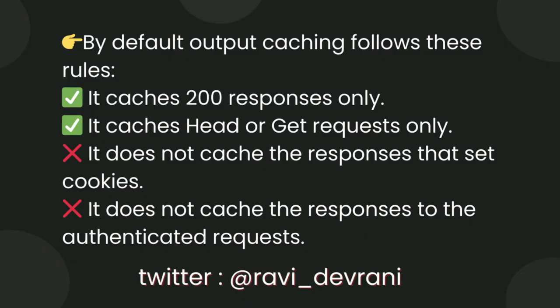There are a few default rules to keep in mind. By default, output caching only caches 200 responses, only caches HEAD or GET requests, does not cache responses that set cookies, and does not cache responses to authenticated requests. These default policies can be overridden, but that is outside the scope of this video.